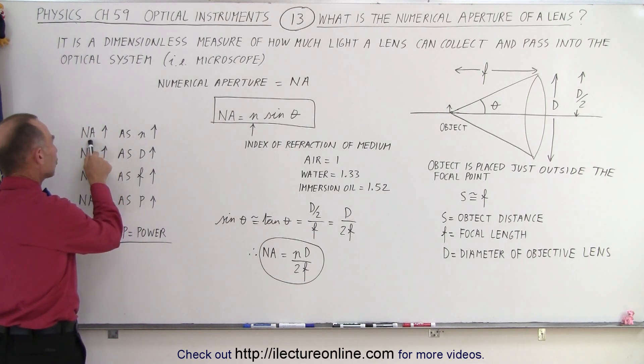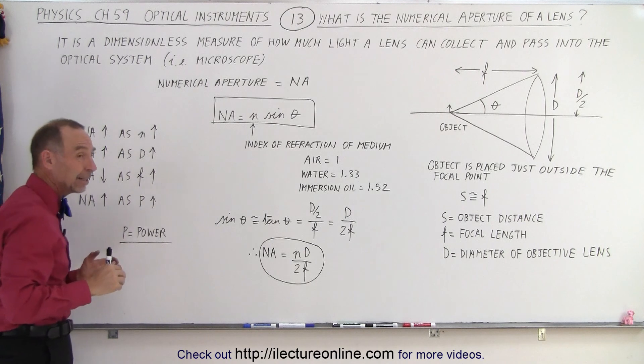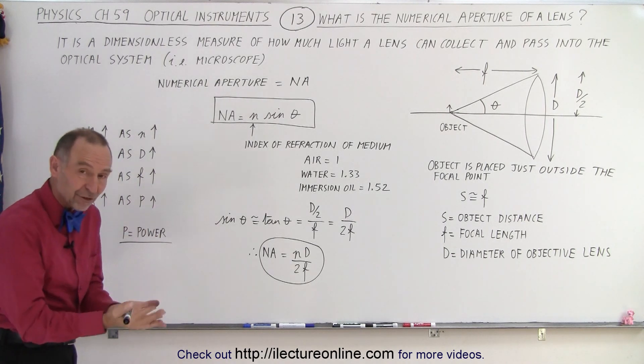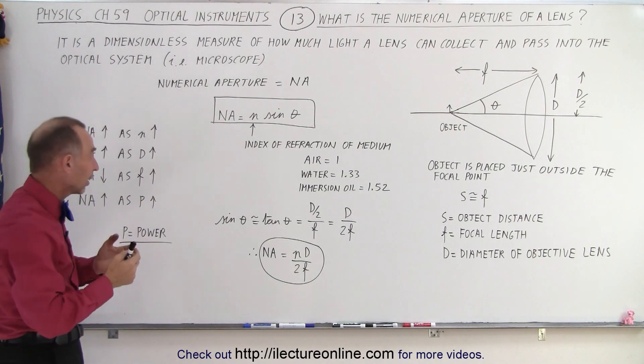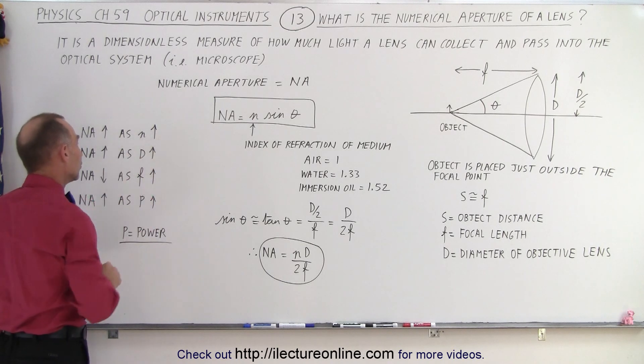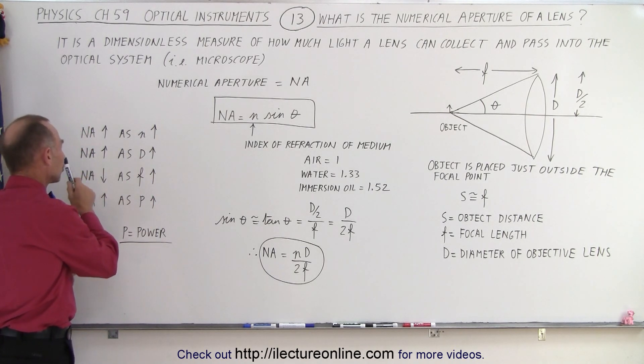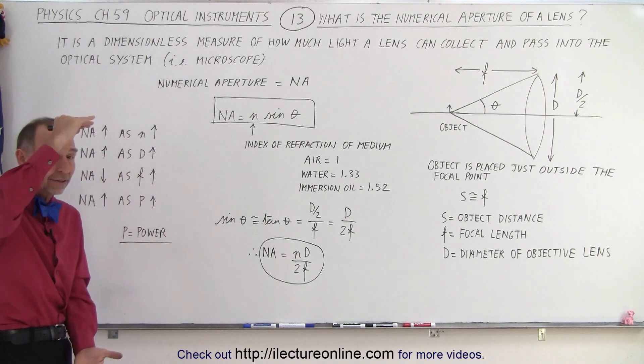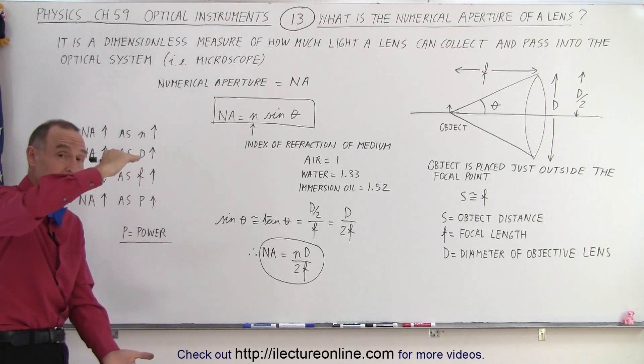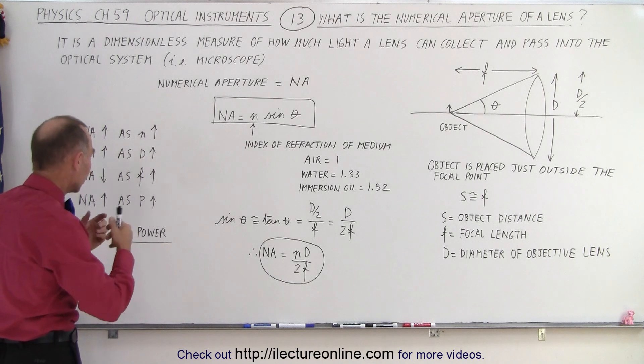So we can see that the numerical aperture increases as the index of refraction of the medium from where the light comes increases, so that's why we use immersion oil as one. Also notice that the numerical aperture increases as the diameter of the lens increases. We want the objective lens to be as big as possible, to let in more light.